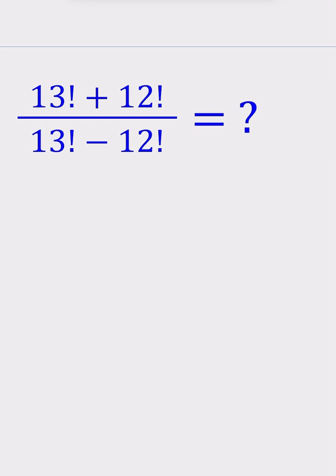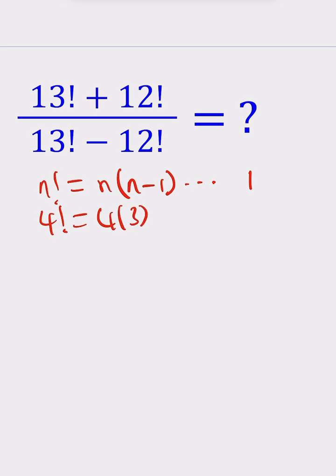What is 13 factorial? What is n factorial? Well, n factorial is basically a product — you start with n and then keep going down until you reach 1. So 4 factorial would be 4 times 3 times 2 times 1, which is equal to 24.